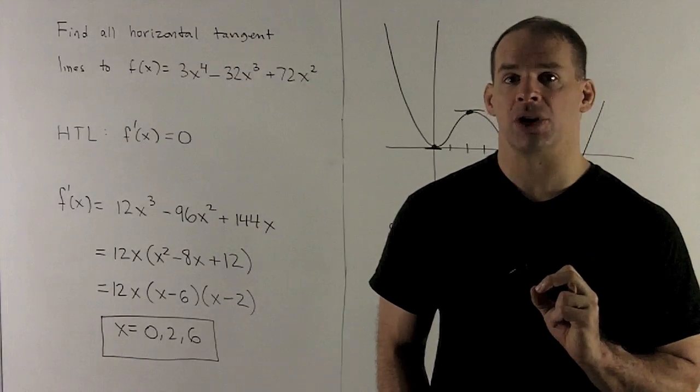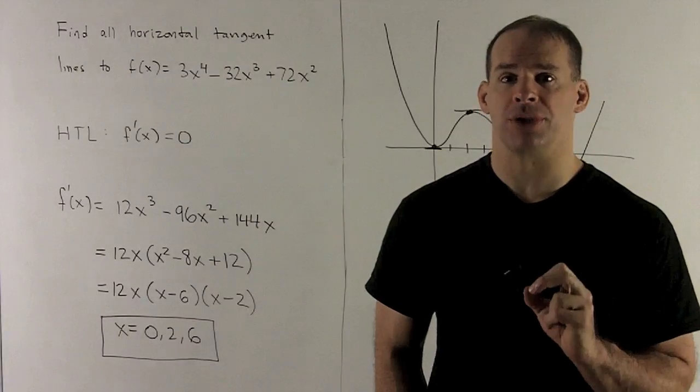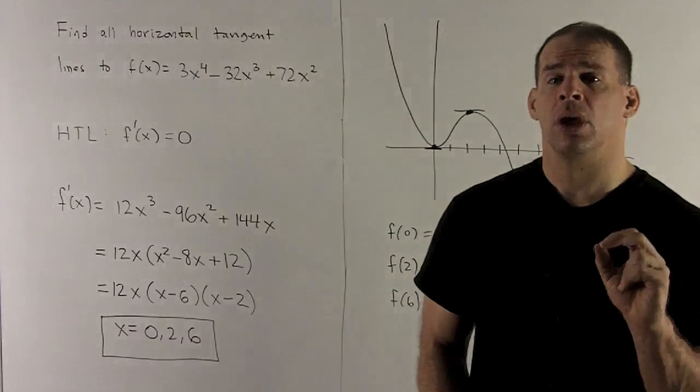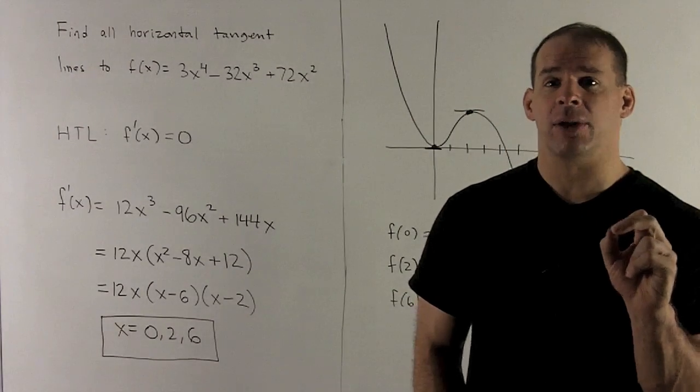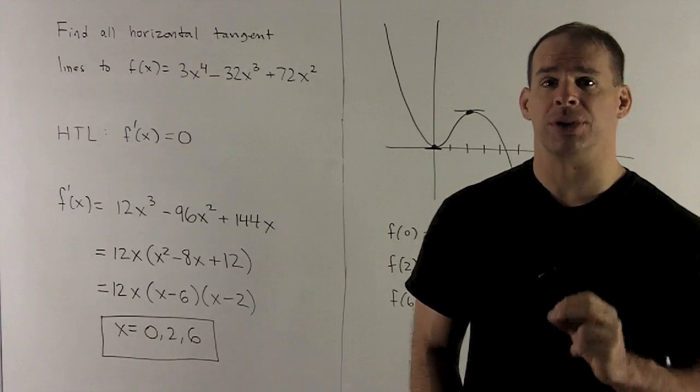Take the derivative of this function. So 4 is going to come down on the x fourth, exponent turns to 3, so that's going to turn it to 12x cubed. On the next term, on the x cubed, 3 comes down, we take 1 off the exponent, gives me x squared, then 3 times 32 gives me 96.